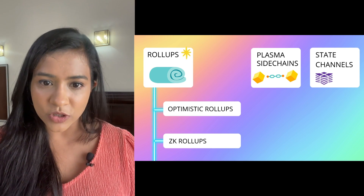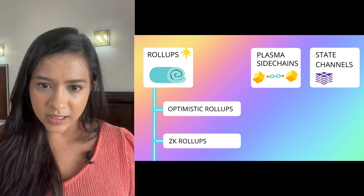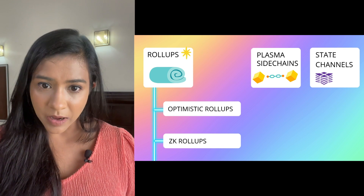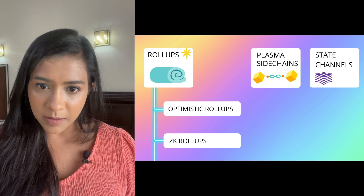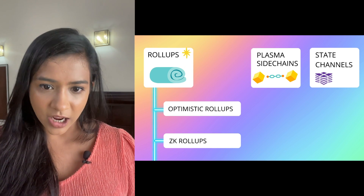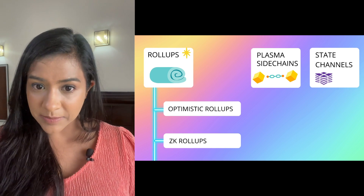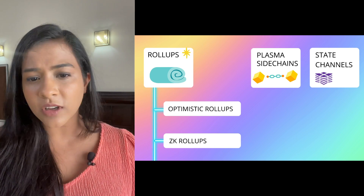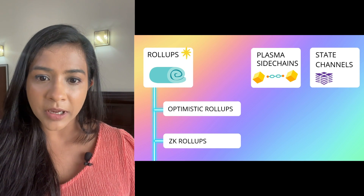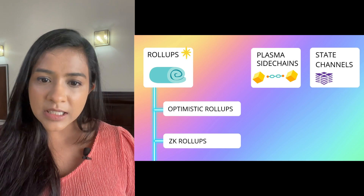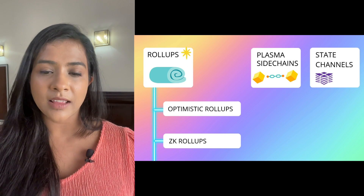Ethereum scaling solutions are of four categories: plasma, rollups, side chains, and state channels. I have added timestamps below so you can hop around to your favorite topic, but for this particular video I suggest you watch the whole way through. Let's start with the most popular scaling solution, which is rollups.